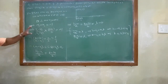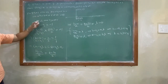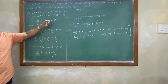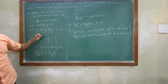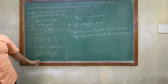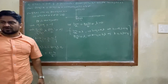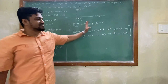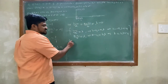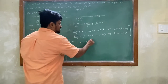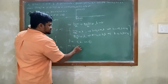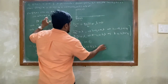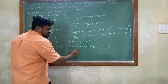To recap: Q lies on the line, PQ is perpendicular to the line so m1·m2 = -1. Using slope formulas we got the first two terms, then introduced λ to get h and k. Now substitute h and k into equation 1 (Q lies on the line): a·h + b·k + c = 0.